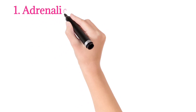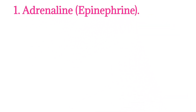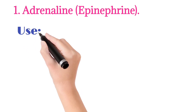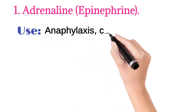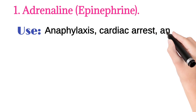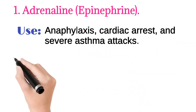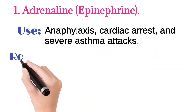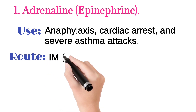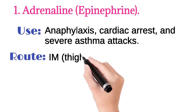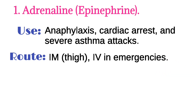The first one is adrenaline, also known as epinephrine. It is used in anaphylaxis, cardiac arrest, and severe asthma attacks. It is injected intramuscularly in the thigh or intravenously in emergencies.